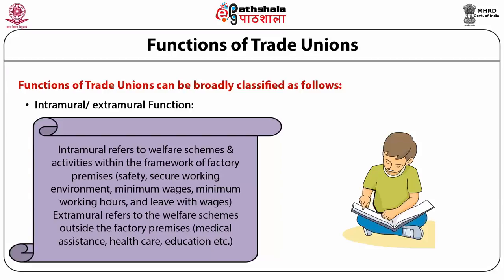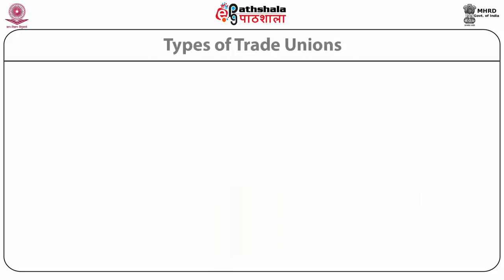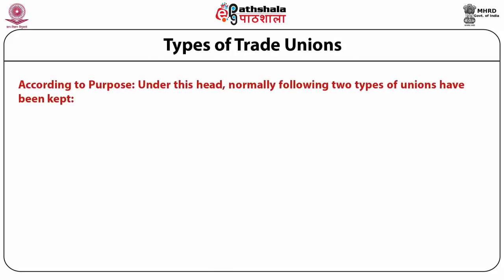c. Intramural or extramural functions. Intramural refers to welfare schemes and activities within the framework of factory premises, that is safety, secure working environment, minimum wages, minimum working hours and leave with wages. Extramural refers to welfare schemes outside the factory premises, that is medical assistance, health care, education, etc.